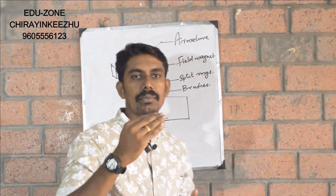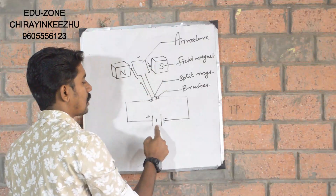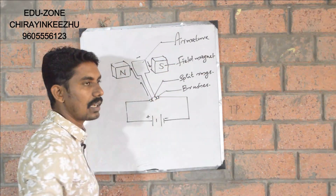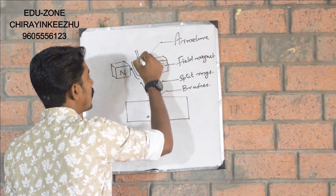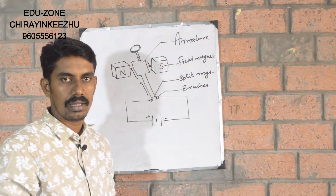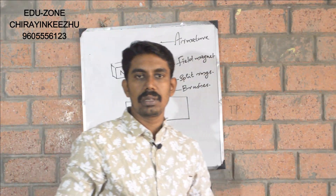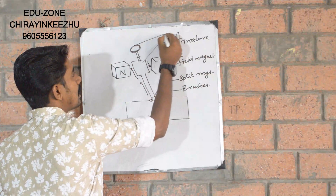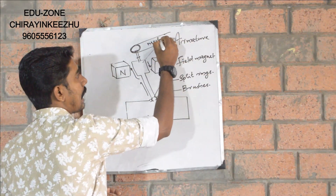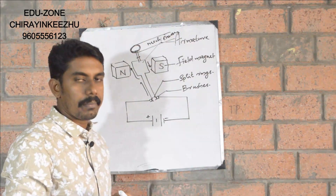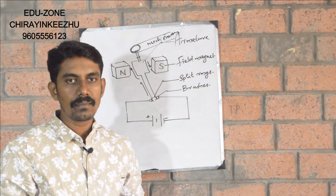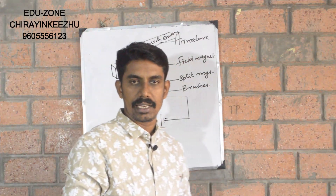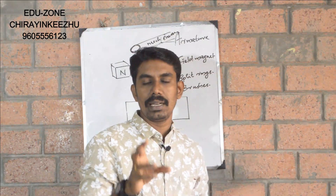I'm running an electric motor, and the electric motor will be running the armature. This electric motor will run the armature. When we run the armature in the magnetic field, we get a certain rotation. We can use this motor to get a lot of mechanical energy.